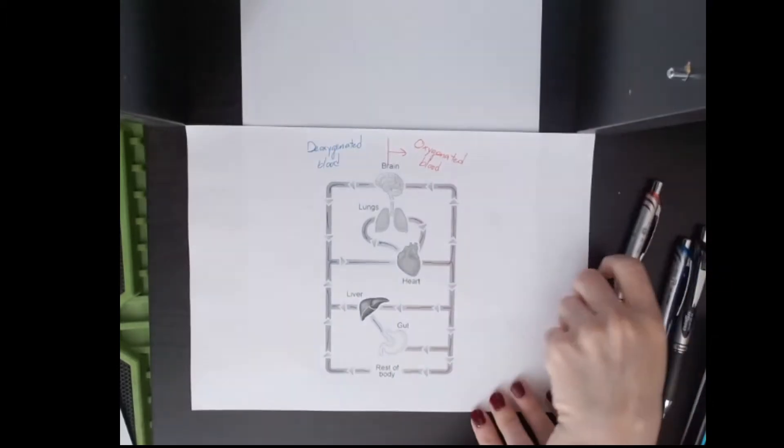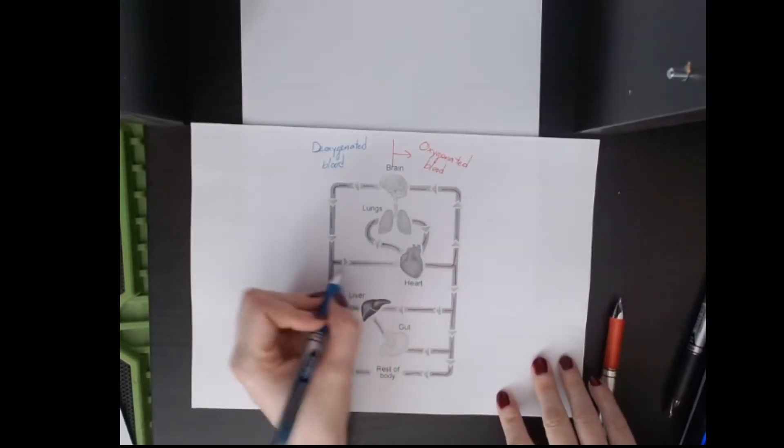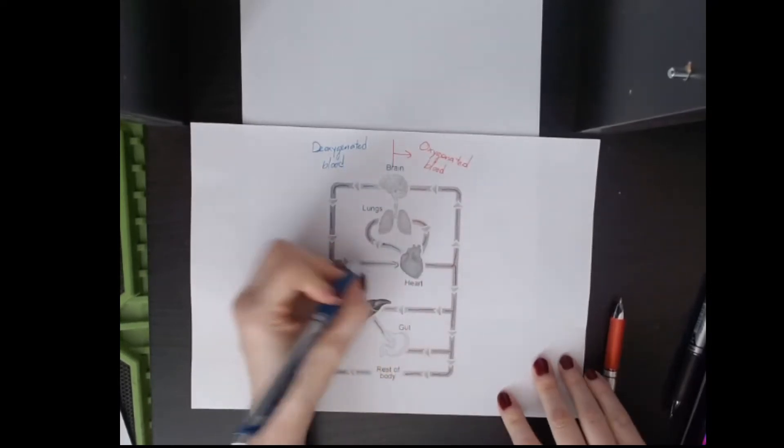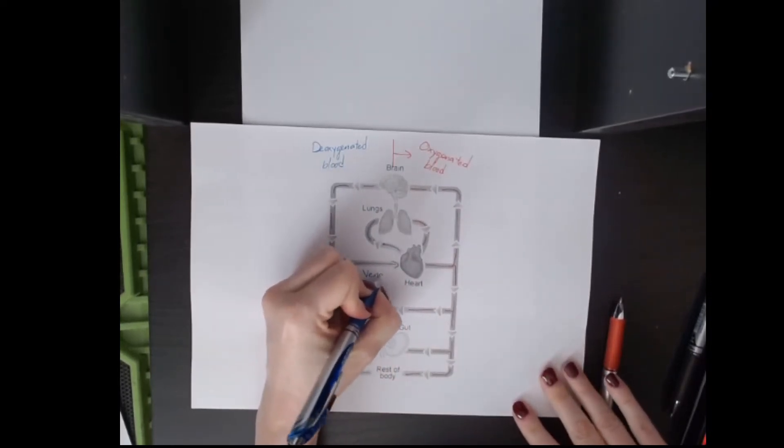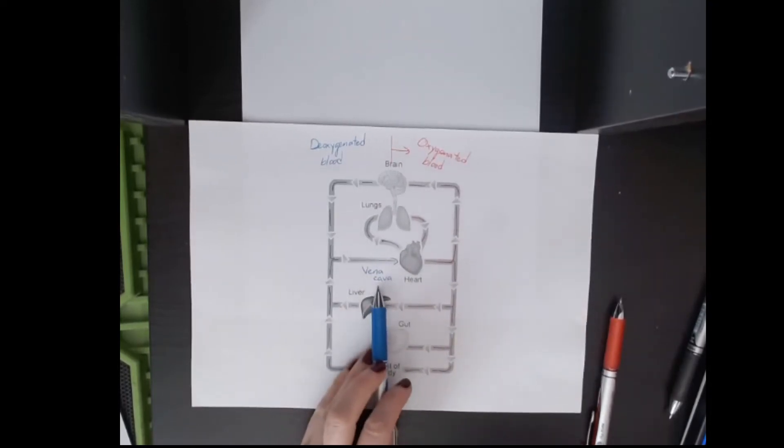So let's look at the heart first. The idea is that the blood returns to the heart here, and the name of this blood vessel is the vena cava. So the vena cava is one of the largest blood vessels in the body. You have a superior and an inferior. You may have learned that, which is fine, but you don't need to know it for the IGCSE. Vena cava is sufficient.